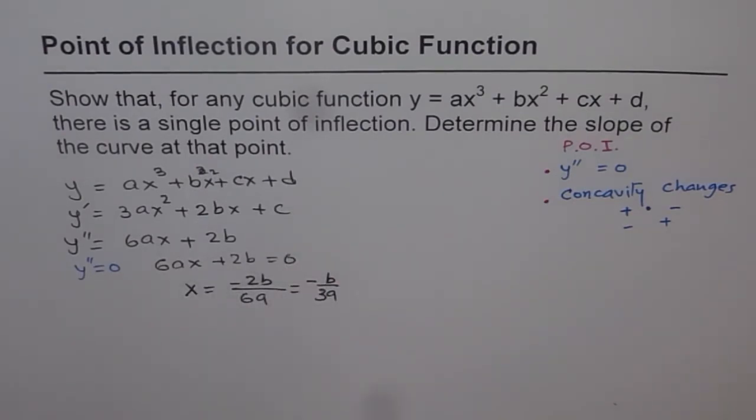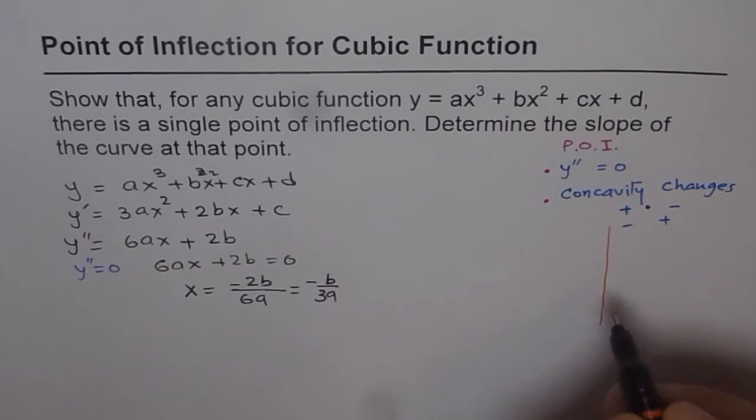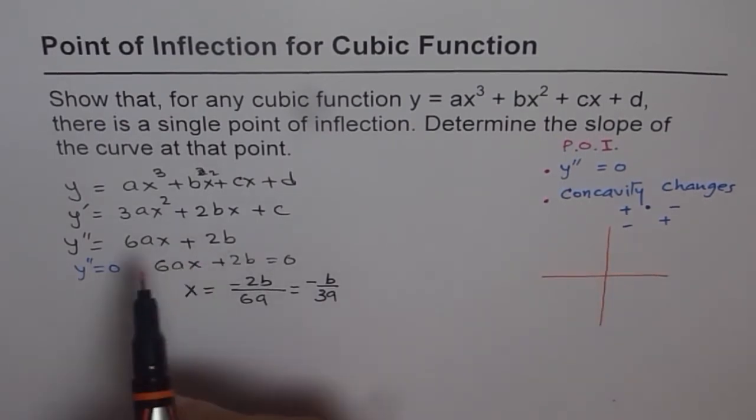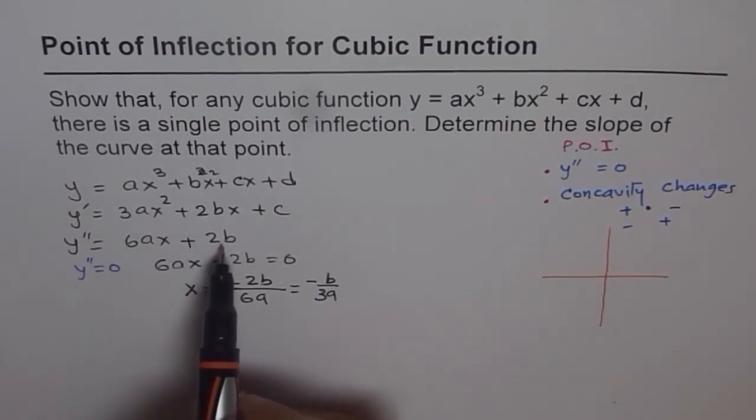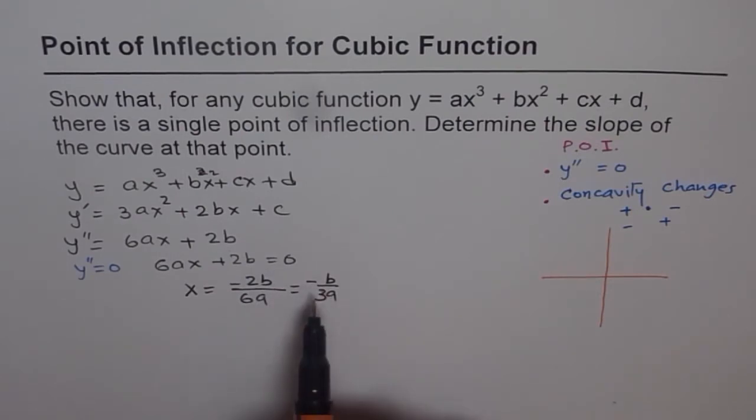So that is the point at which we can have point of inflection. Now how do you say that this point will be a point of inflection? That is kind of critical to understand. So let us look into that part also.